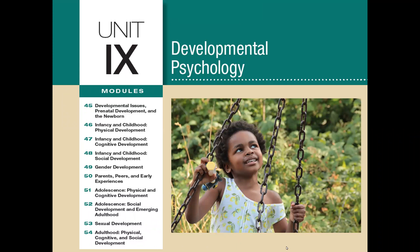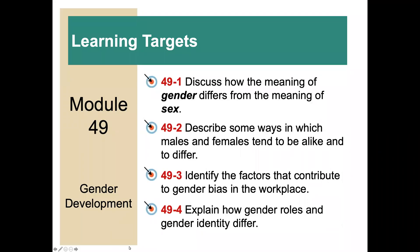Let's get started. This isn't a really long module, and hopefully we can be done in about 15 minutes. There are four learning targets. We're going to be discussing how the meaning of gender differs from the meaning of sex, looking at some ways in which males and females tend to be alike and tend to differ, identifying the factors that contribute to some biases in the workplace, and explaining how gender roles and gender identity differ.